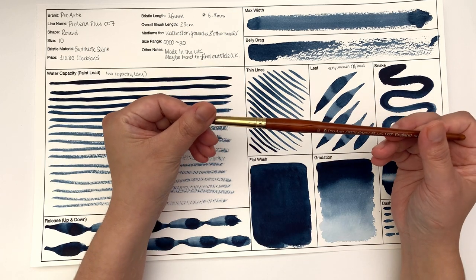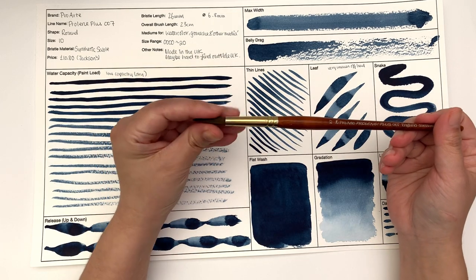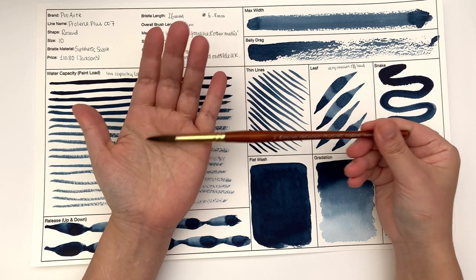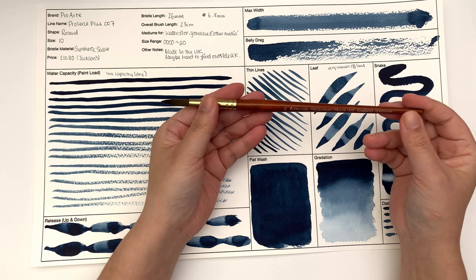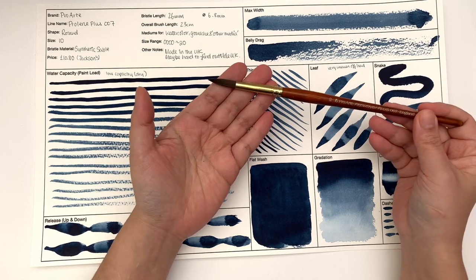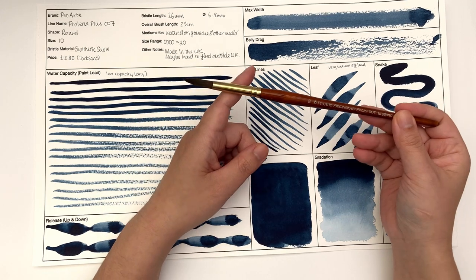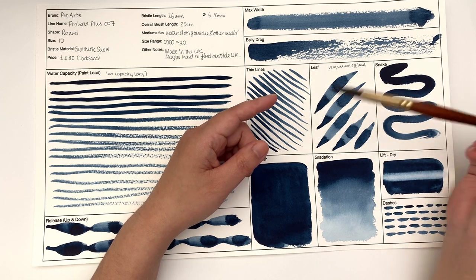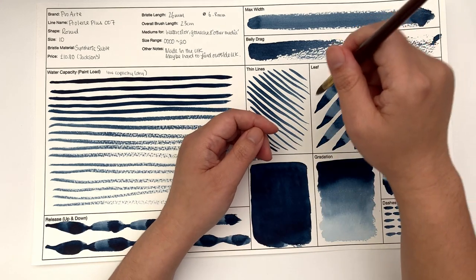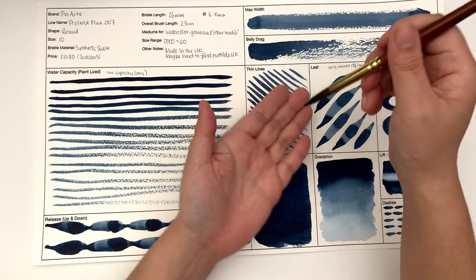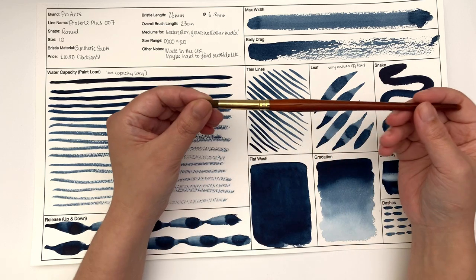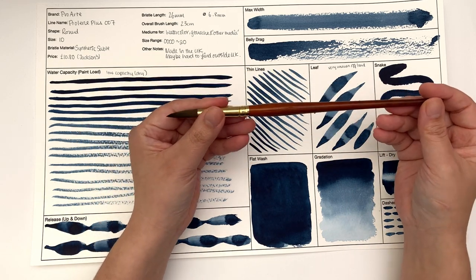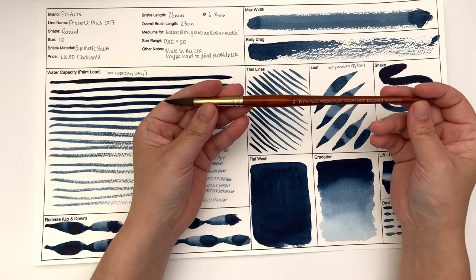That's it for ProArt ProLean Plus. It will always be my workhorse because it's very practical for swatching. If you do do a lot of swatching, I can definitely recommend this. I wouldn't recommend this for any detailed work or botanical work where you're putting the brush up and down on the paper a lot because the water load isn't great. But as a workhorse go-to kind of brush, this is my favorite.